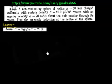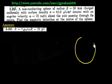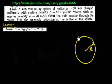This question is again finding the magnetic induction at the center, but this time we have a sphere, not a circle. Due to the circle, the magnetic induction is μ₀I/2R. This time we have a sphere of radius R, and this sphere is charged with surface charge density sigma.